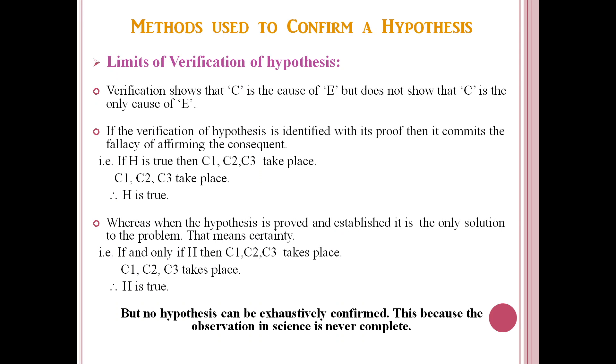But no hypothesis can be exhaustively confirmed. This is because the observation in science is never complete. So we have studied in this part of the chapter hypothesis what is the method to confirm the hypothesis, that is the verification method and its types and limits. Thank you.